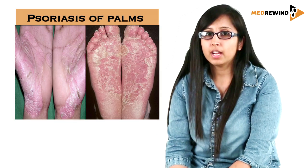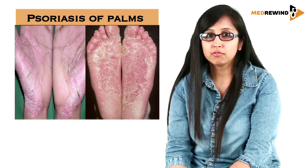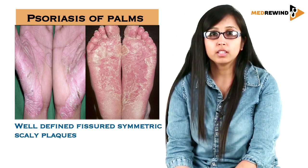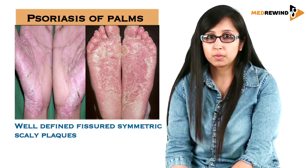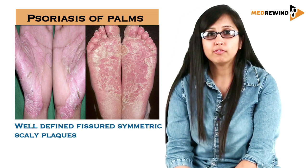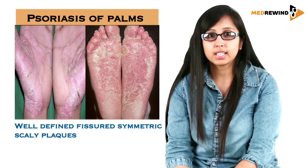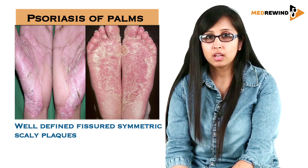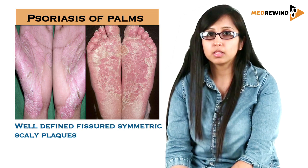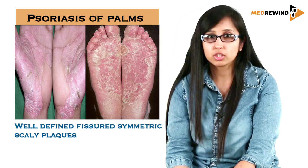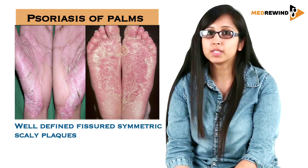For palmoplantar psoriasis, we must differentiate it from palmoplantar eczema or dermatitis. In dermatitis or eczema, there is a history of oozing, and the scales are ill-defined and diffuse. In psoriasis, the scales are well-defined erythematous, deep and fissured, but a history of oozing is absent.